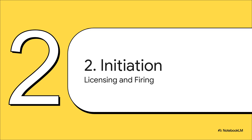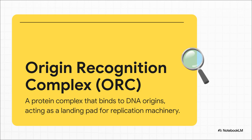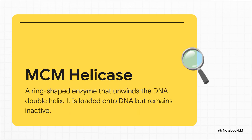Let's dive into initiation. To prevent total chaos, a cell has to be absolutely sure it copies its DNA exactly once per cycle — not zero times, not twice, just once. It achieves this through a brilliant two-step system: first it licenses all the potential starting points, and only later does it give the signal to fire them. It all starts with something called the Origin Recognition Complex, or ORC. Think of ORC as the gatekeeper — a complex of proteins that sits on the DNA at very specific sequences, the origins, acting as a landing pad marking the spots where replication is supposed to begin. The next major player to arrive is the MCM helicase, the engine that will actually unwind the DNA double helix. But here's the crucial control point: it gets loaded onto the DNA in a totally inactive state. It's there, it's ready, but the power is switched off.